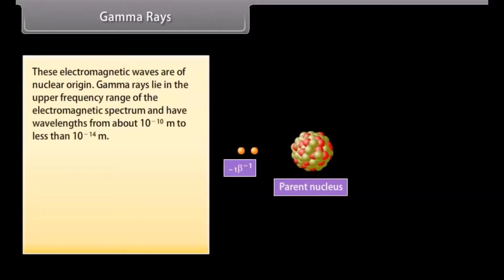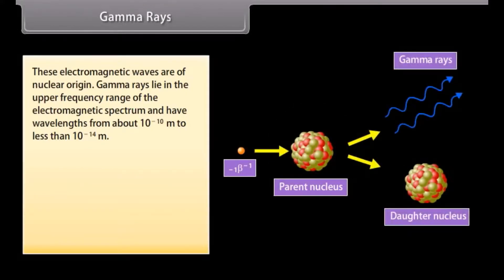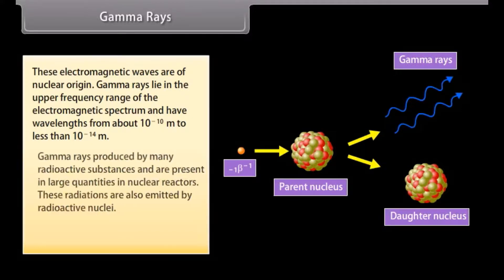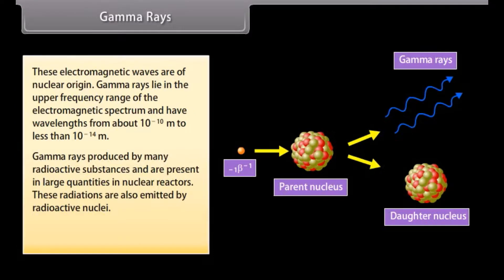Gamma rays are electromagnetic waves of nuclear origin. They lie in the upper frequency range of the electromagnetic spectrum and have wavelengths from about 10^-10 m to less than 10^-14 m. Gamma rays are produced by many radioactive substances and are present in large quantities in nuclear reactors. They are also emitted by radioactive nuclei and are used in medicine to destroy cancer cells.